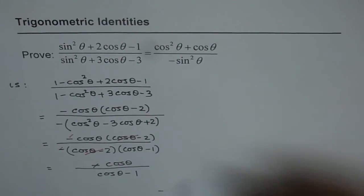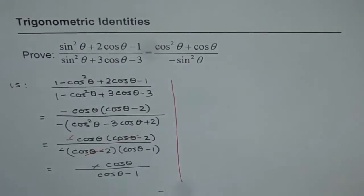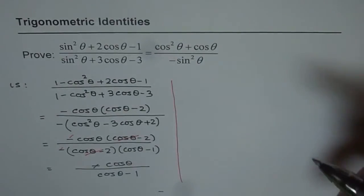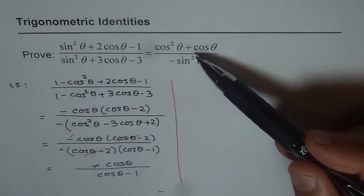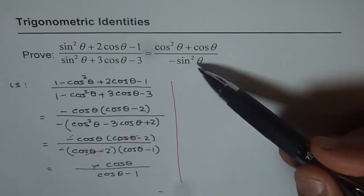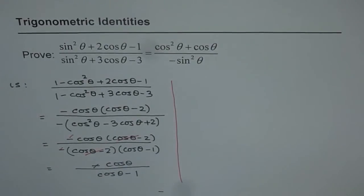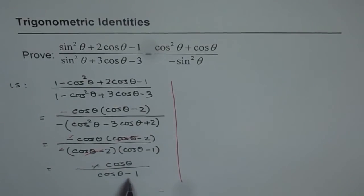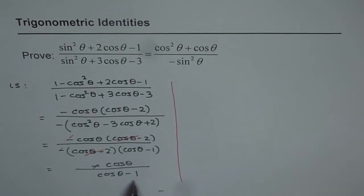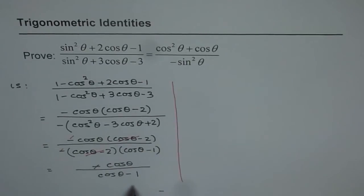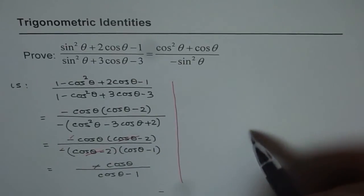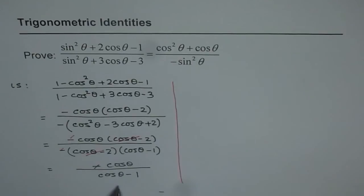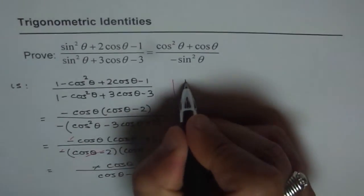But that is not what we want to prove. In the numerator we want to prove cos²θ + cosθ, and in the denominator −sin²θ. So what we can do is, if we continue with the left side we can multiply by 1 + cosθ and get our result. That is one way of doing it. The second way is we can continue with the right side and solve it to show it's equivalent to the left side. So both approaches are good. Let's solve the right side.